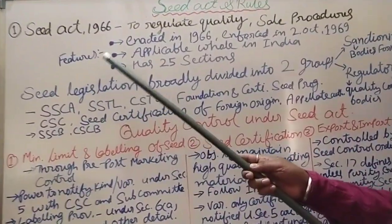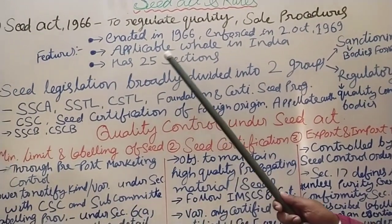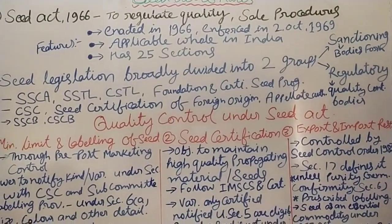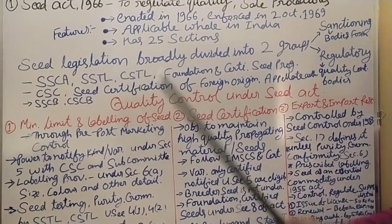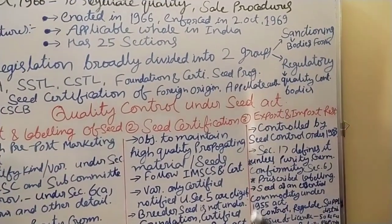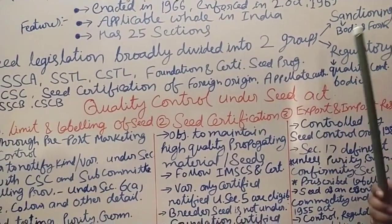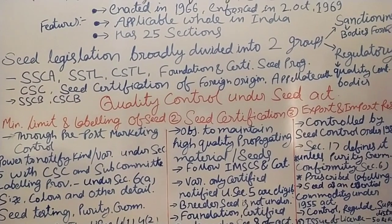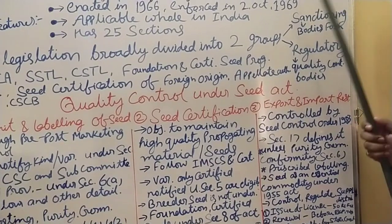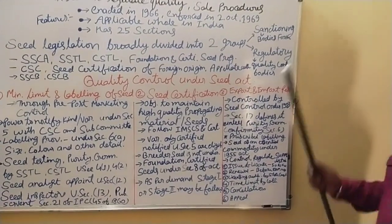Its main points: enacted in 1966, enforced on 2nd October 1969. It is applicable throughout India, comprising all states and union territories. It has 25 sections. Indian seed legislation is broadly divided into two groups: first is sanctioning legislation, where different bodies are formed for making rules and regulations; and second is regulatory legislation, where the rules formed by sanctioning bodies are enforced by quality-controlling bodies.